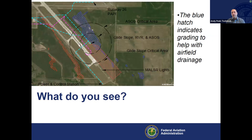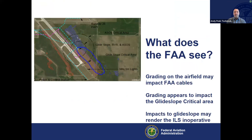Here's another example from the Dakotas — the blue hatch indicates some grading that might help with airfield developments, get wildlife out of an area, or support clearing operations for snow in a glide slope critical area. Great benefit to an airport. But the agency might see it impacting FAA cables. Any impact to a glide slope critical area may require changing the alignment of those antennas. If we change antennas on a glide slope and it's out of tolerance, the glide slope may go out of service or be inoperable. Minor changes or enhancements that seem benign may come into a major impact to the agency.